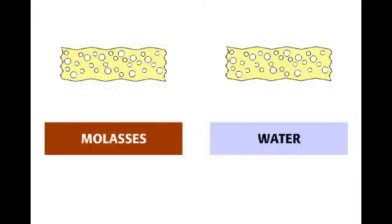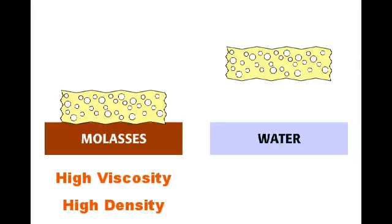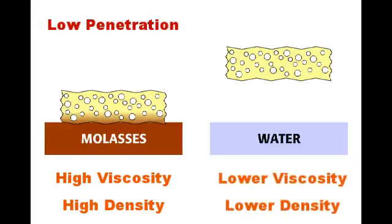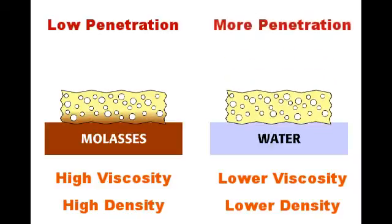To visualize an example of this principle of fluid dynamics at work, imagine a sponge sitting on both molasses and water. With molasses, you have a higher viscosity and density fluid, and as a result, lower penetration into the sponge. With water, you have both lower fluid viscosity and density, and therefore, more penetration into the sponge.